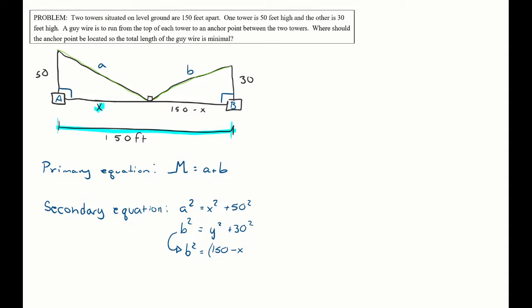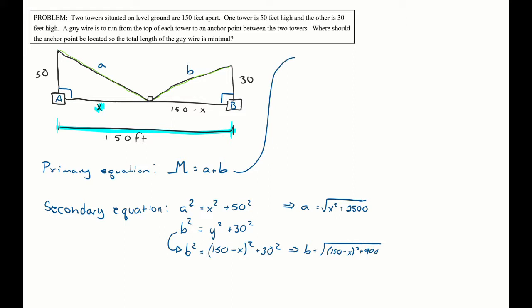Now I can solve both equations for a and b by taking the square root. Since I'm dealing with positive lengths, a = √(x² + 2500) and b = √((150 − x)² + 900). This lets me rewrite the minimizing equation as m = √(x² + 2500) + √((150 − x)² + 900) — one equation, one variable.